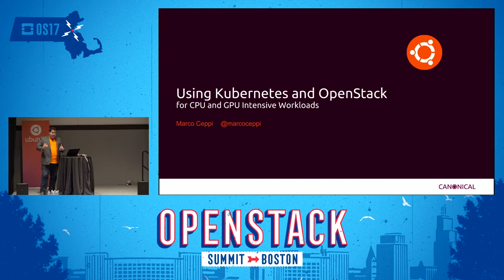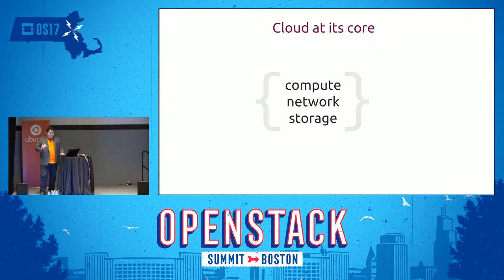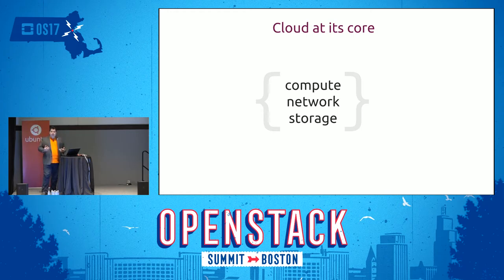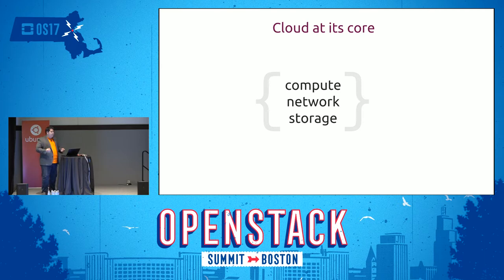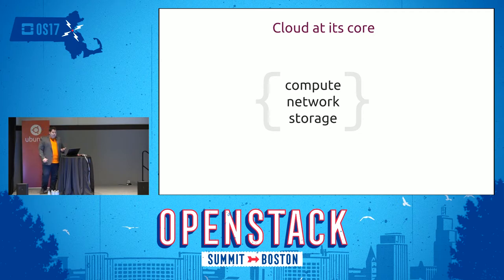Because of that, we actually tiptoe into different territories. I want to briefly recap what we're talking about when we talk about cloud. At its core, the way I view cloud is the commoditization of consumption of three things: compute — VMs that give me instances with CPU time; network — connectivity between instances; and storage — a way to persist and utilize storage in an on-demand fashion.